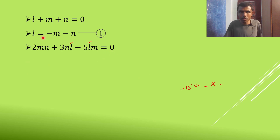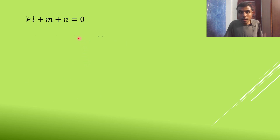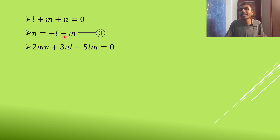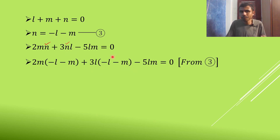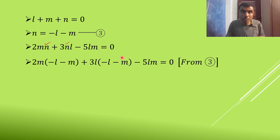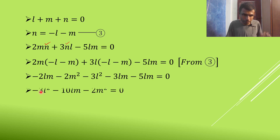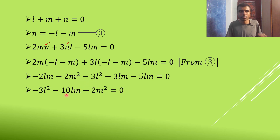Now repeat the same process but write N = −L − M from equation 1. Substitute into the second equation where N appears: 2M(−L − M) + 3L(−L − M) − 5LM = 0. Expanding: −2LM − 2M² − 3L² − 3LM − 5LM = 0. Collecting LM terms: −2LM − 3LM − 5LM = −10LM. So I get: −3L² − 10LM − 2M² = 0.